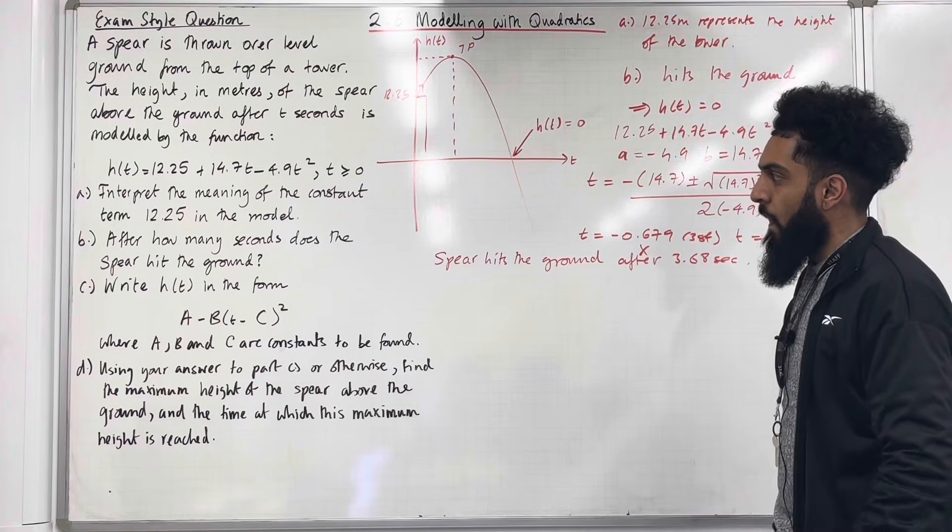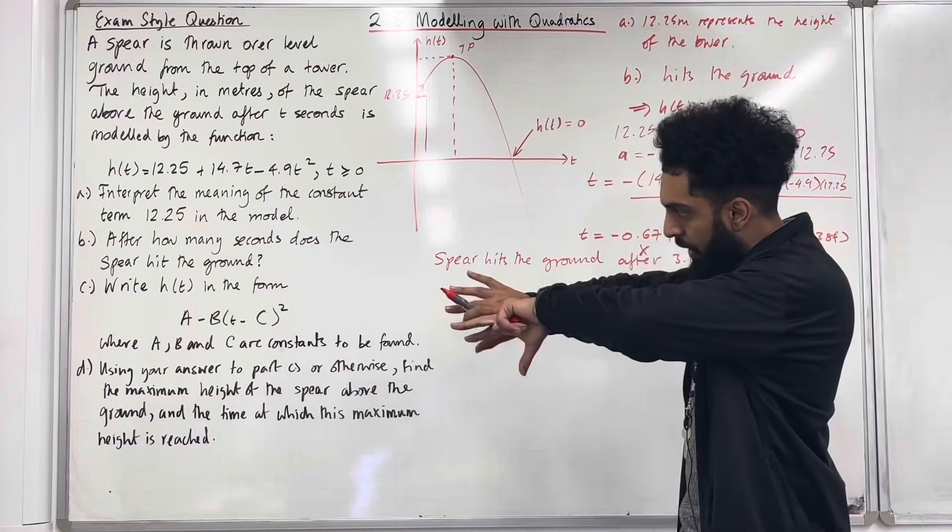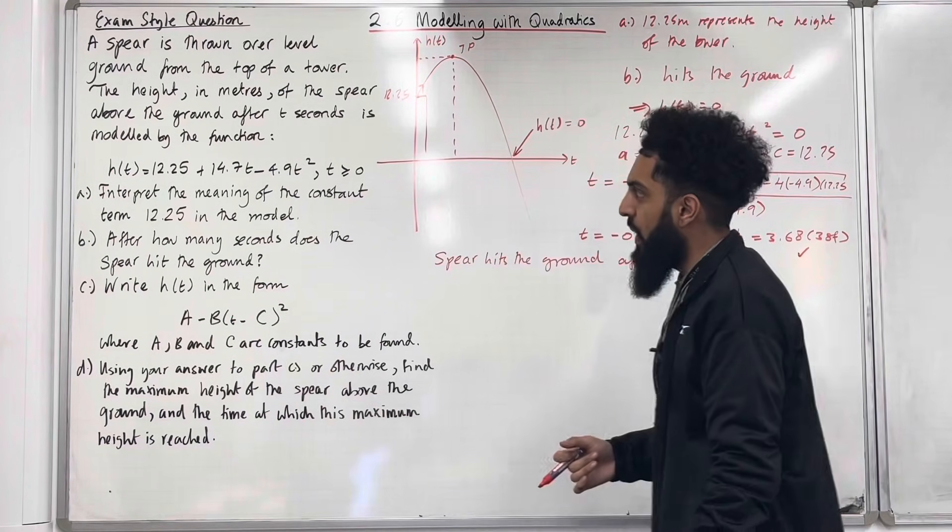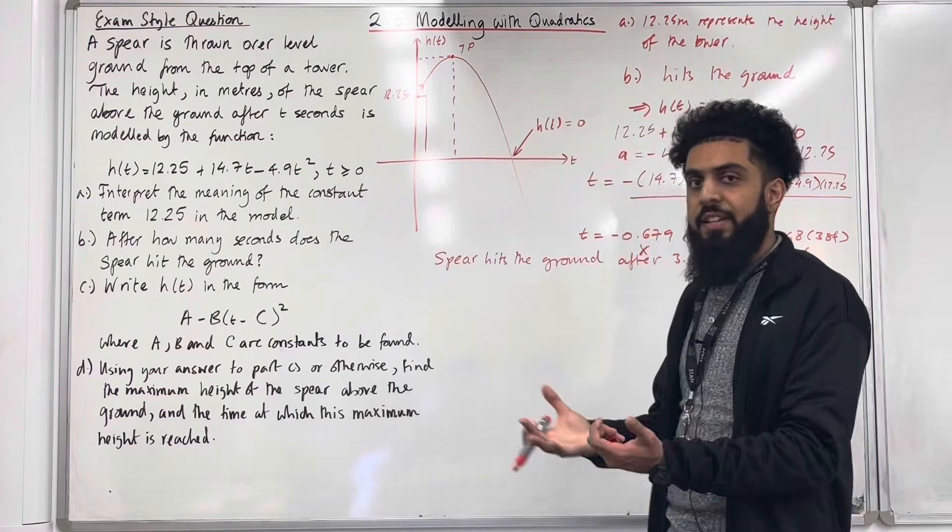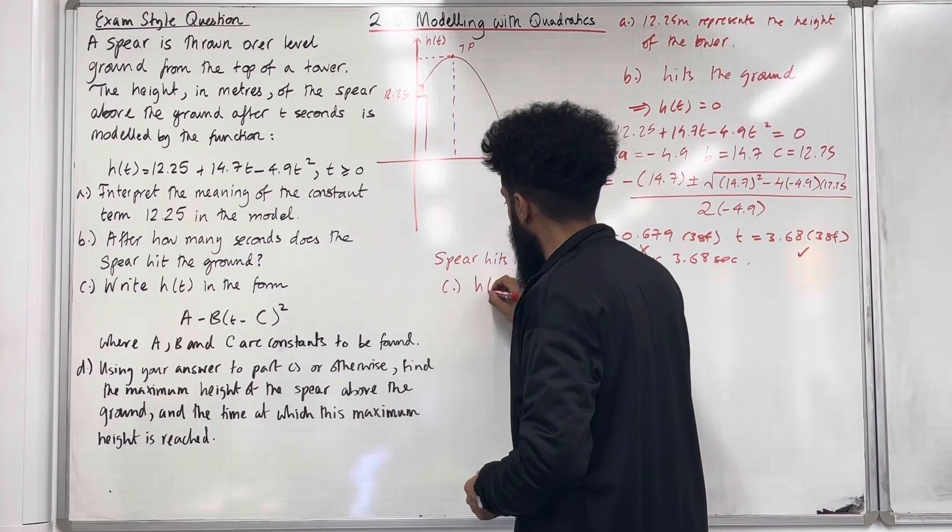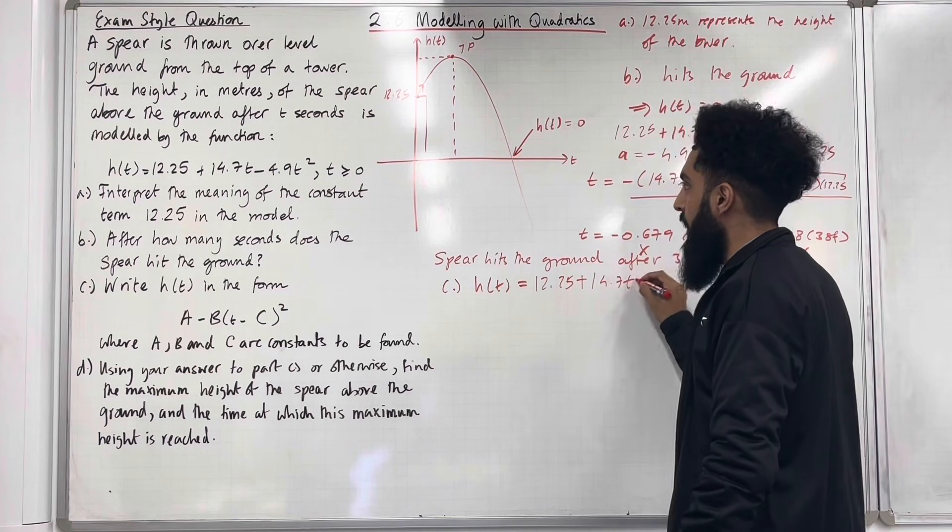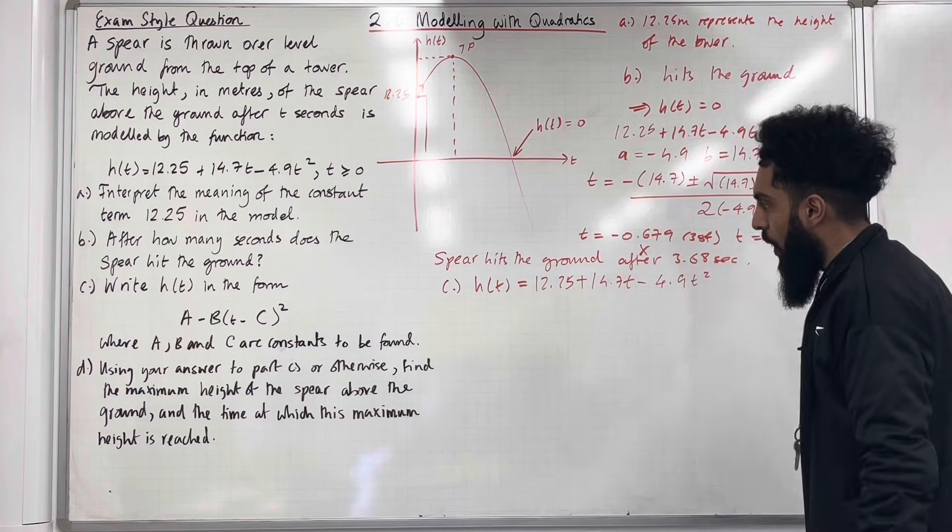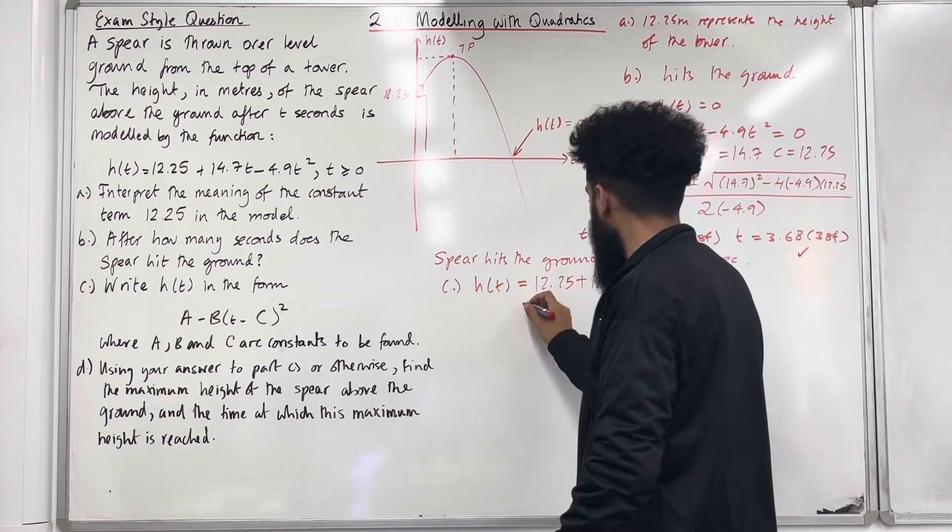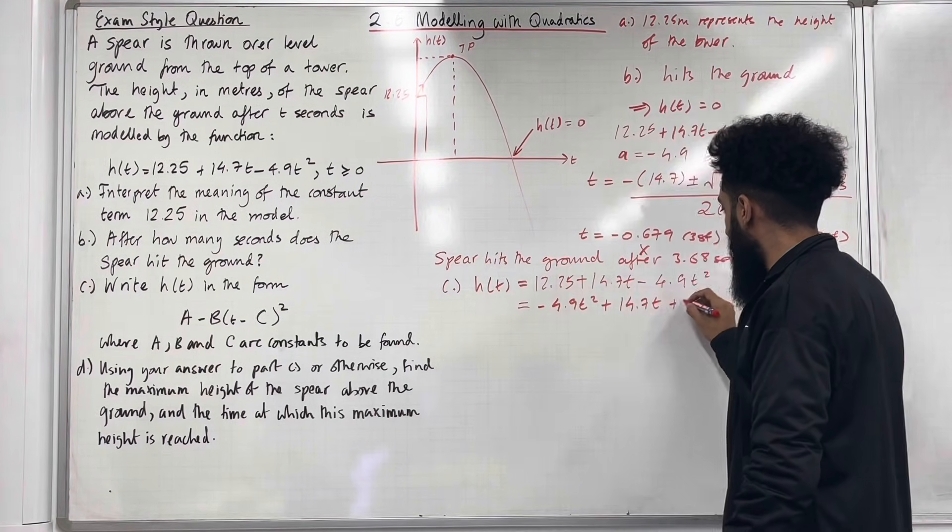Let's move on to part C. In part C we need to write the function h(t) in the form A - B(t - C)². That there is complete the square form. So we are going to rewrite this using complete the square to give us this. h(t) = 12.25 + 14.7t - 4.9t². Now before I complete the square I am going to rewrite this quadratic in the following form: h(t) = -4.9t² + 14.7t + 12.25.